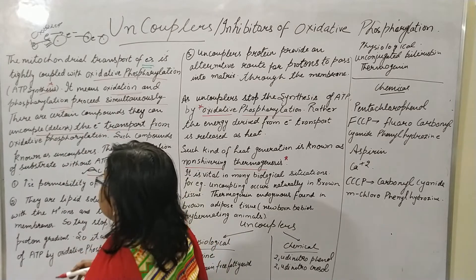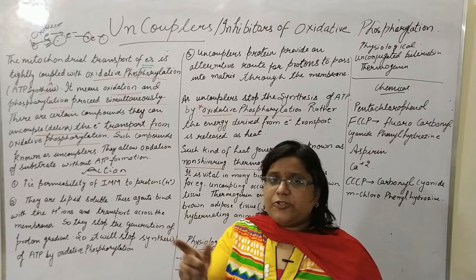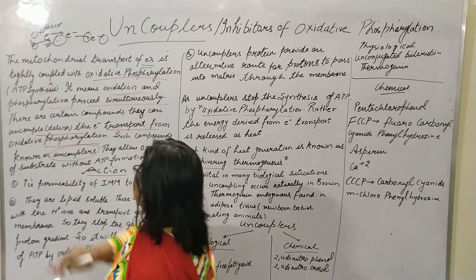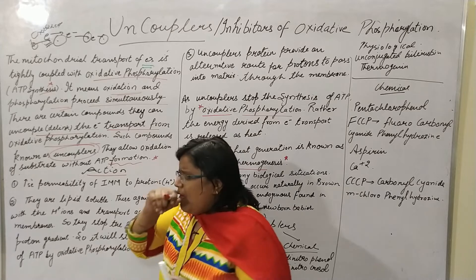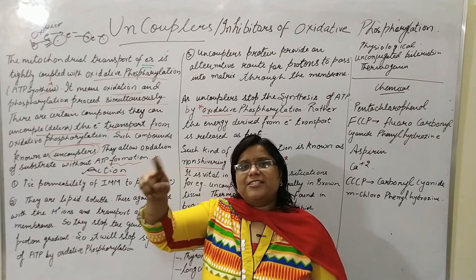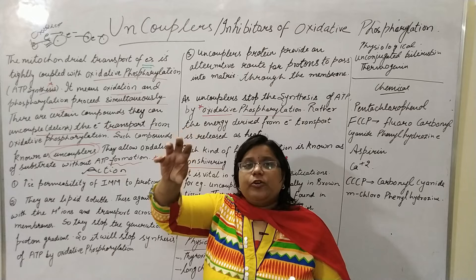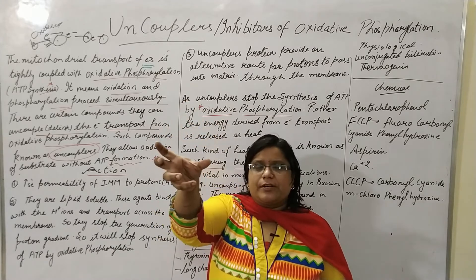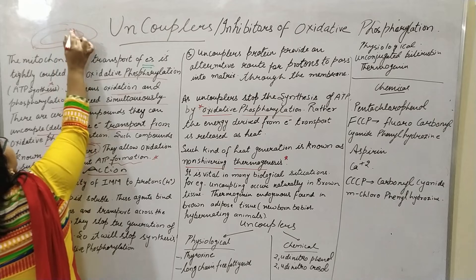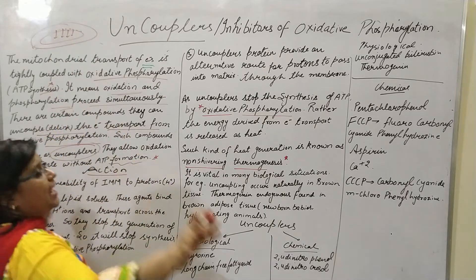There are certain compounds that can uncouple or delink the electron transport from oxidative phosphorylation. These compounds delink the electron transport chain from oxidative phosphorylation. Such compounds are known as uncouplers. They allow the oxidation of substrate without ATP formation. The oxidation and electron shuffling will occur, but when the electrons get accumulated, the uncoupler disrupts that accumulation. As electrons accumulate on the outer side of the inner mitochondrial membrane, the uncouplers disturb that electron gradient.